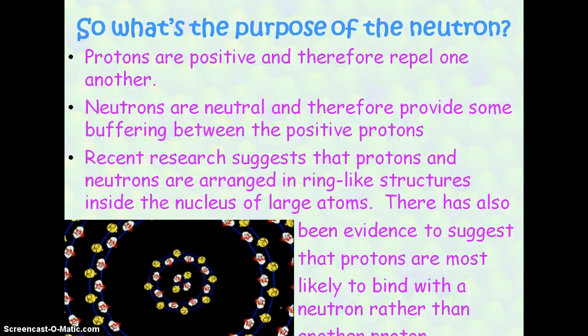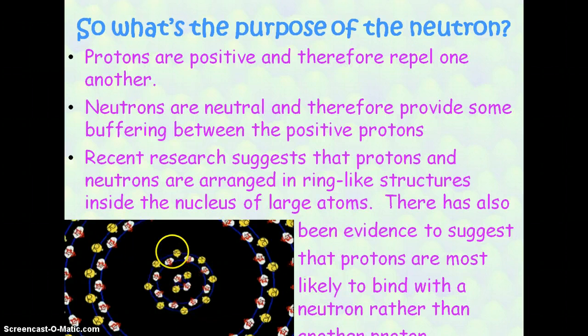What's the purpose of a neutron? Protons are all positive, and therefore they repel one another. Neutrons are neutral, and therefore provide some buffering between the positive protons. When you throw the neutron in the mix, it gives enough space between the positive protons where they don't repel as much. Recent research suggests that protons and neutrons are arranged in the nucleus in a ring-like structure, just like electrons are around the nucleus. There's also evidence that protons are more likely to bind with a neutron rather than another proton, where each subset of proton and neutron is more attracted to one another than the proton or neutron beside it.